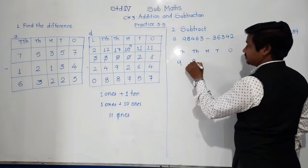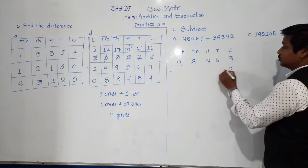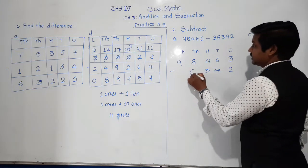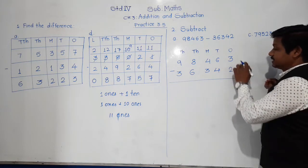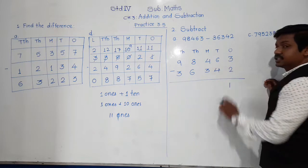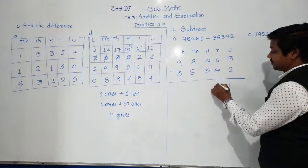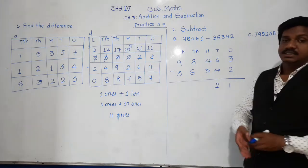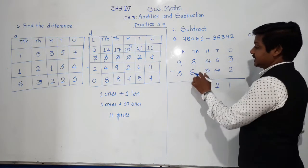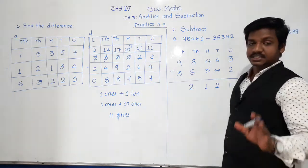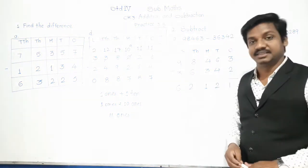98,463 minus 36,342. Starting from ones place: 3 minus 2 is 1. 6 minus 4 is 2. 4 minus 3 is 1. 8 minus 6 is 2. 9 minus 3 is 6. So the answer is 62,121. Now don't use fingers to subtract — try to calculate in your mind.